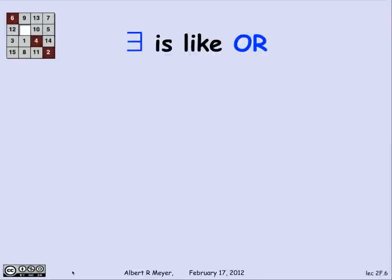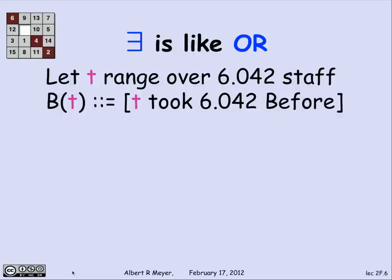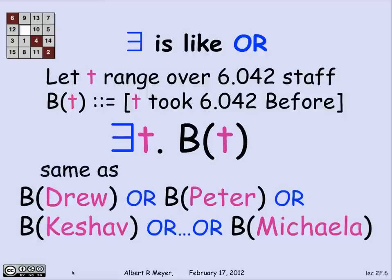Similarly, the backwards E, there exists, acts like an OR. If I tell you that T is ranging over the 6042 staff, and I write B(T), the predicate that means T took 6042 before, then if I tell you that there exists a T B(T), what I'm telling you is that B(Drew), either Drew took it before, or Peter took it before, or Keshav took it before, or Michaela took it before. This statement is true because several of the staff members took 6042 from me before.